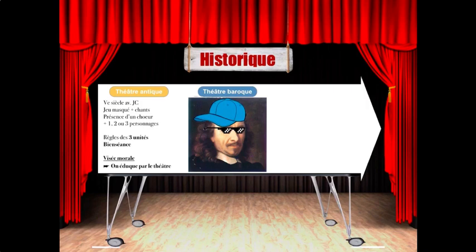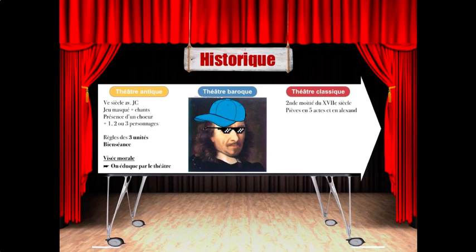Le problème, c'est que ni le théâtre antique ni le théâtre baroque n'arrivent à satisfaire pleinement la critique. Alors, il a bien fallu trouver une solution, puisque d'un côté la visée morale, les chants, le chœur, tout ça ne satisfait pas. Et de l'autre côté, le plaisir ne satisfait pas totalement non plus, il manque quelque chose. Et la solution, ce sera le théâtre classique, qui apparaît à la seconde moitié du 17ème siècle, et qui est, en quelque sorte, un mélange entre le trop-plein de tragicomédie et la nostalgie d'un théâtre passé, du théâtre antique.